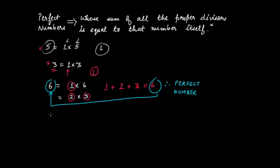What about seven? Seven is a prime number and can be written as one times seven. There is only one proper divisor, which is one. Since one is not equal to seven, seven is not a perfect number.